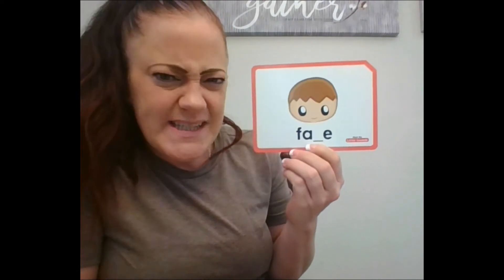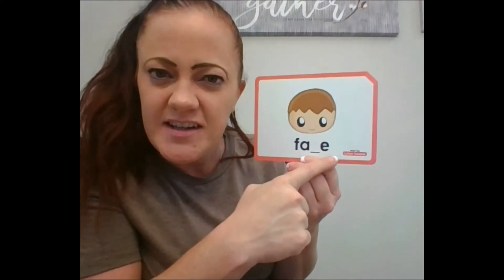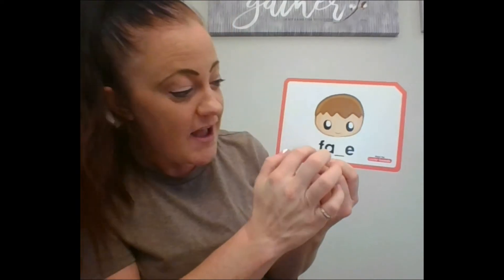That makes sense. All right, here's our last one. It's a face. Face. What's the missing letter here? F-A-C-E. I hear something — is it the soft sound C? I think it is. Face. So C is the missing letter. Face. Good job.